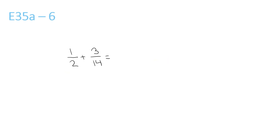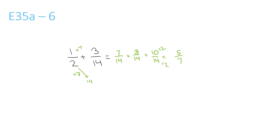2 and 14 both go into 14. 2 times 7 is 14, so we have to times the top by 7. So 1 times 7 is 7 over 14. Plus 3 over 14 as it stays the same. Equals 10 over 14. Now the top and bottom can be divided by 2. 10 divided by 2 is 5, over 14 divided by 2 is 7.